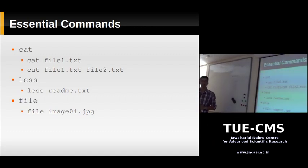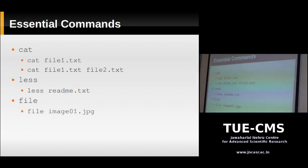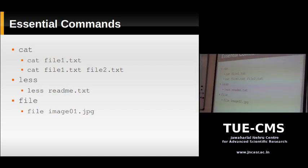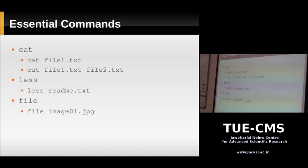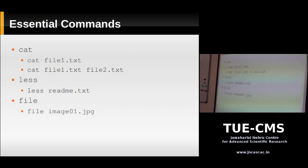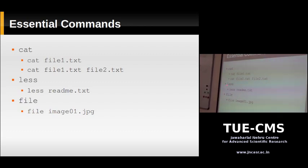The 'less' command shows you the contents of a file a page at a time. If you use 'cat' on a long file, the top part just scrolls off-screen. With 'less', you can use the down arrow or Page Down to scroll through and view the file. Whenever you have files you need to read, use 'less filename'.